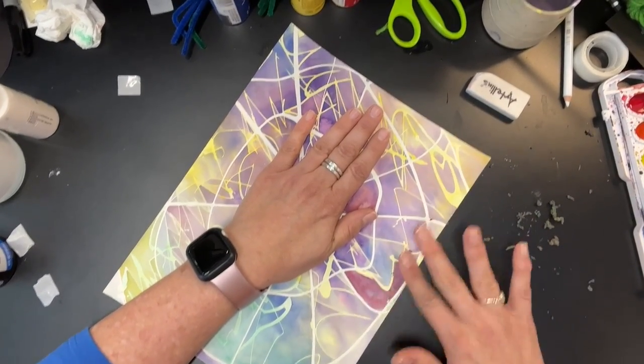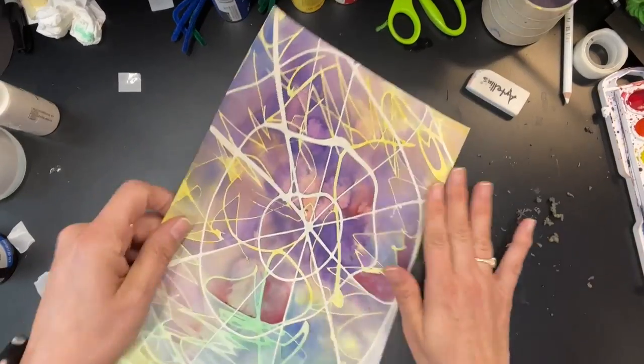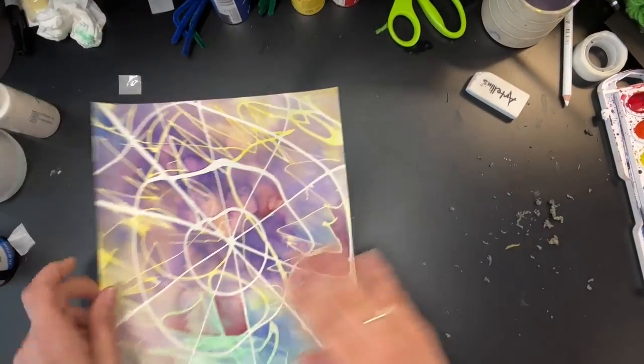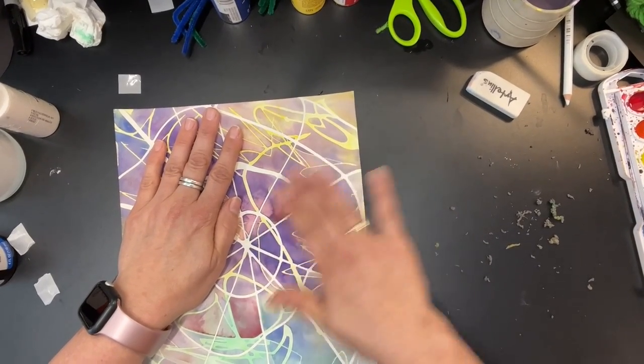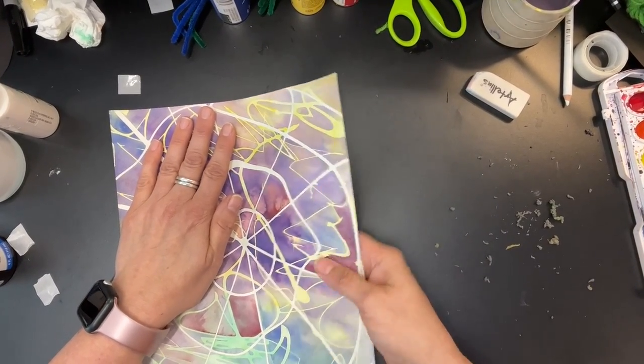Again, you're going to do it slowly and sometimes going in one direction is a good idea so you don't tear or wrinkle your paper. Check and see that there isn't any you missed by feeling the page.